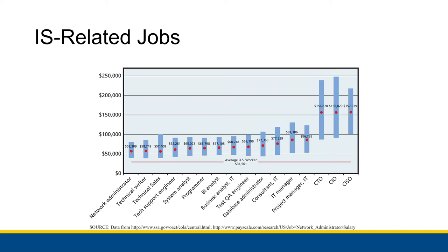If you wanted to do things like programming, network administration, or QA engineering — where you're actually testing an information system to make sure it's working correctly — you could get a computer science, information systems, or software engineering degree and supplement that with a business minor. Or you could get a minor in computer science. There are a lot of different possibilities to focus on one area of knowledge, like learning how to program, but supplementing that with business knowledge that will help you succeed in a business environment.